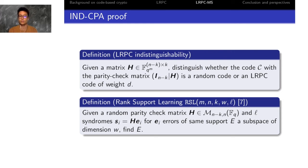The second problem is the rank support learning problem, which is a slight variant of the rank syndrome decoding problem with an additional parameter L, which is a number of syndromes with the same error support. This RSL problem was introduced in the crypto paper of 2017, five years ago.